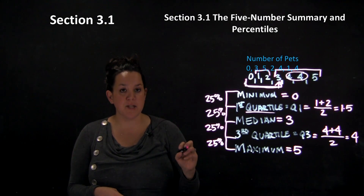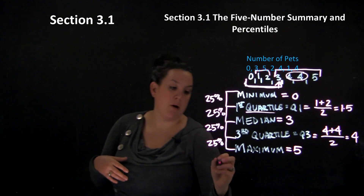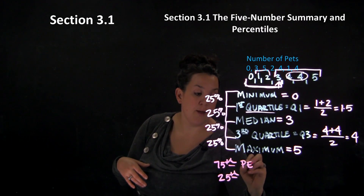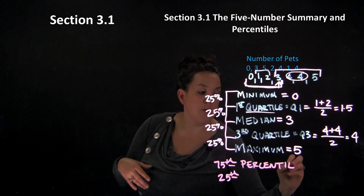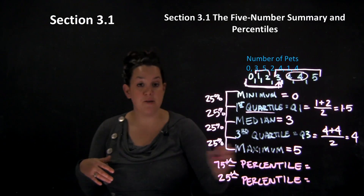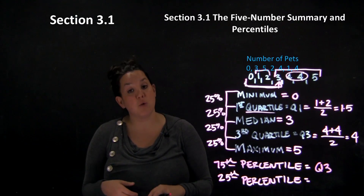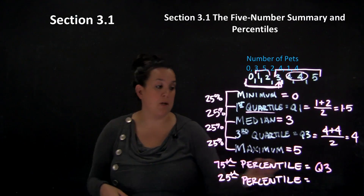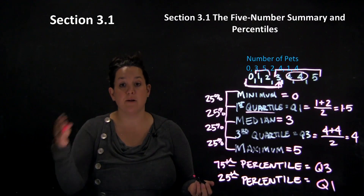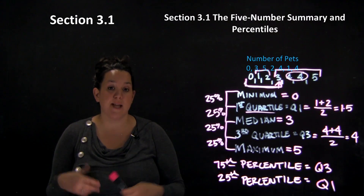The last thing we're going to talk about today is percentiles — those numbers that make you feel either really good or really bad about yourself. There are actually two percentiles we've talked about today: the 25th percentile and the 75th percentile. The 75th percentile can also be called Q3, because it has 75% of the data below it. Similarly, the 25th percentile could also be called Q1. The median could be called the 50th percentile. Percentiles are named for whatever percent of data is below them.